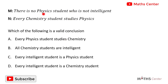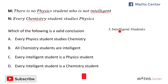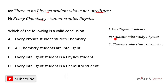Let's read the statements again. The first statement is: there is no physics student who is not intelligent. The second statement is: every chemistry student studies physics. Looking at these two statements, we can see there are three groups of students: intelligent students, physics students, and chemistry students. I'll use the letter I to represent intelligent students, P to represent physics students, and C to represent chemistry students.